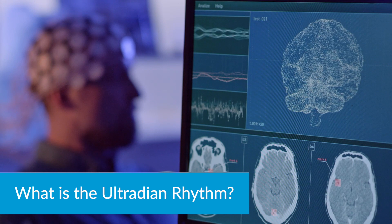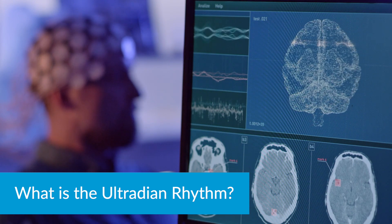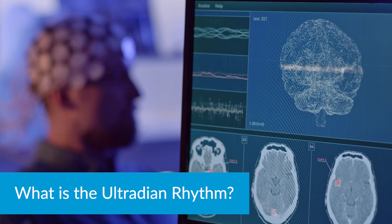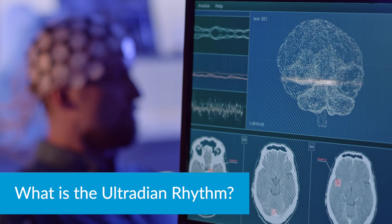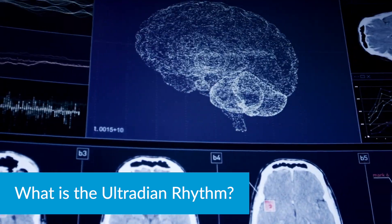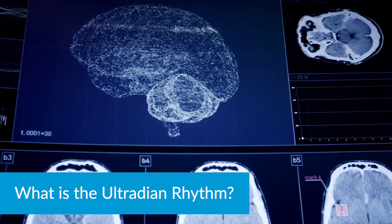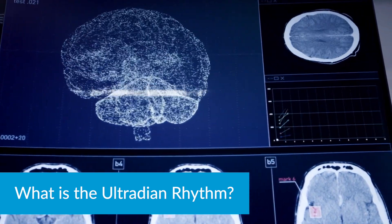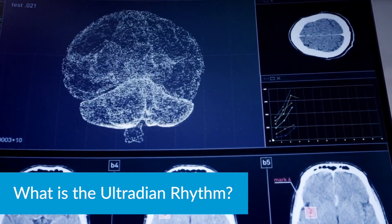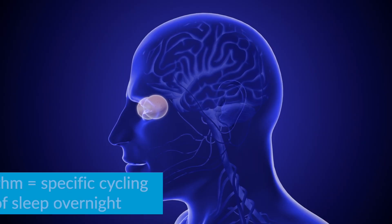What is the ultradian rhythm? You may be asking how many rhythms does sleep have and how do they all stay in check. Just take it as further confirmation of the very specific and necessary design that sleep has. The ultradian rhythm is actually the specific cycling of the stages of sleep overnight.